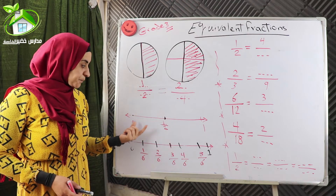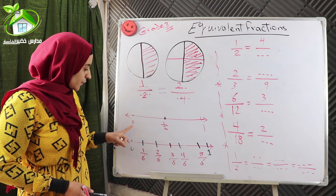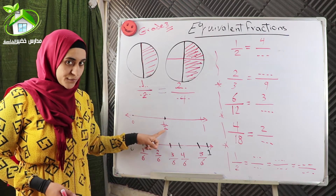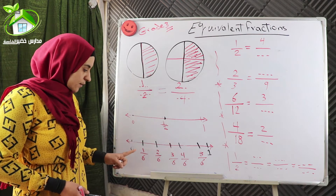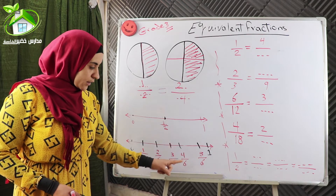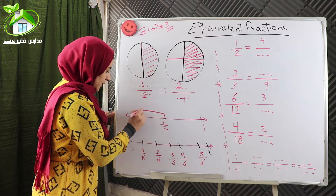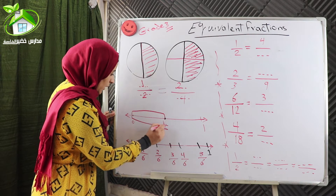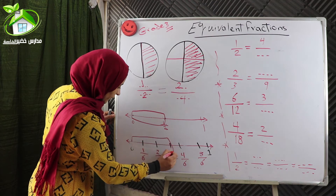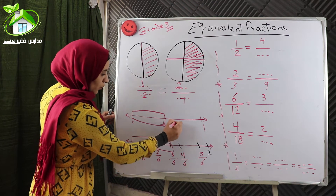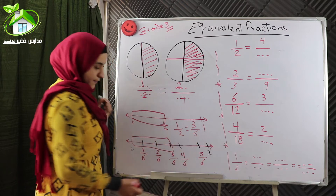Let's use the number line to know Equivalent Fractions. The first number line represents half, one over two. And the second one represents sixths: one over six, two over six, and so on. If we look at the number line, we will find that the distance from zero to half is equal to the distance from zero to three over six. So one over two, or half, equals three over six.